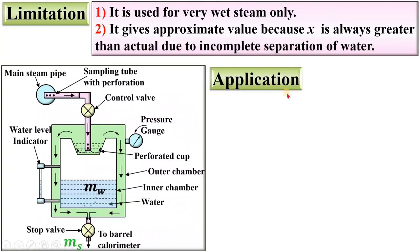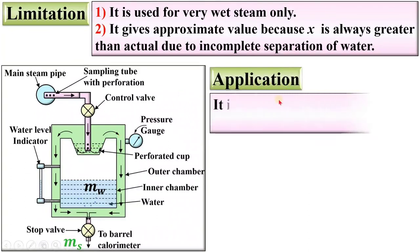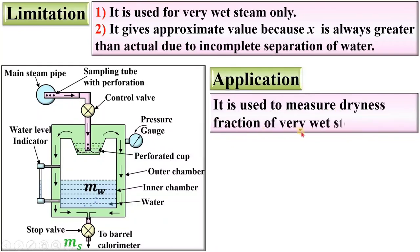The application of the separating calorimeter: it is used to measure the dryness fraction of very wet steam only. If the steam is very dry, it will not give a perfect result. Please put your valuable feedback in the comment box. Thanks, dear friends, for watching this video.